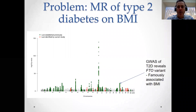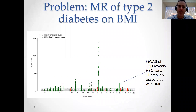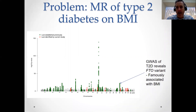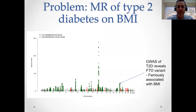Imagine that you're interested in the relationship between type 2 diabetes and body mass index. We know there's a genuine causal relationship between BMI and type 2 diabetes — BMI causally affects risk of type 2 diabetes. So if you have a high BMI, you're more at risk of type 2 diabetes.